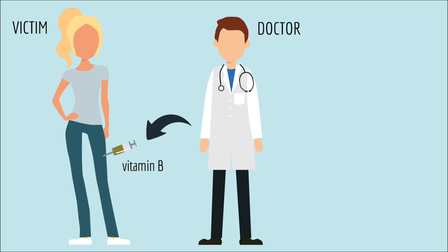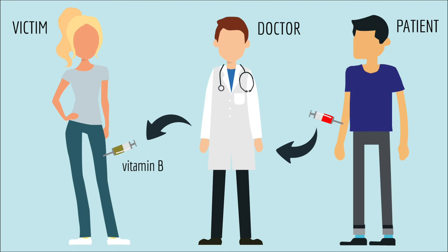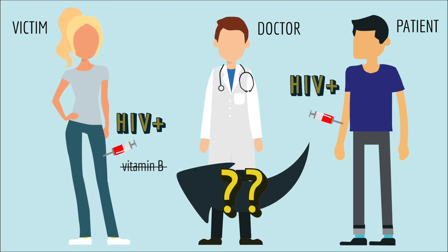According to the medical records at the doctor's office, the night he administered the vitamin B shot, he had also drawn blood from a patient who was HIV positive. The victim suspected that the vitamin B shot was actually blood from the HIV positive patient. But the doctor argued that she could have gotten HIV from someone else. Is it even possible to prove where somebody got their HIV from? Of course it is.